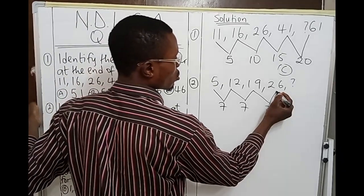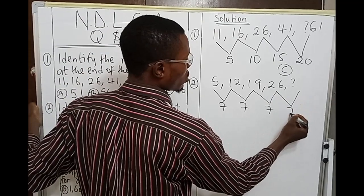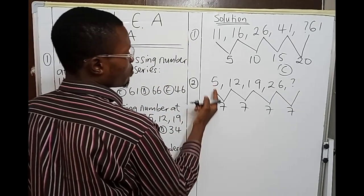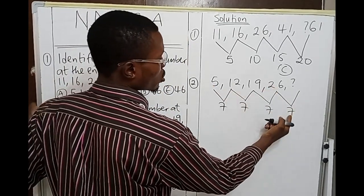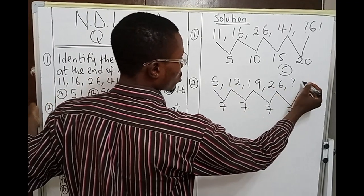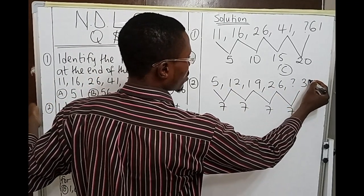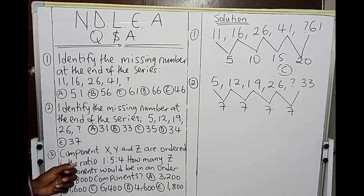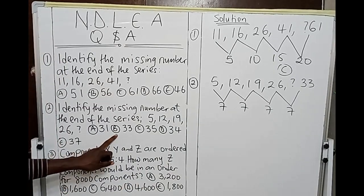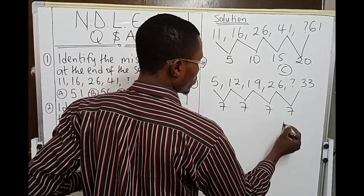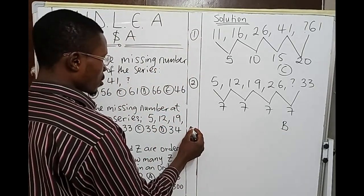That's it, they have a constant difference. So the next difference must be also 7. 5 plus 7 is 12, so 26 plus 7 gives us 33. So the next number is 33, and that is given by option B. Now move to number three.